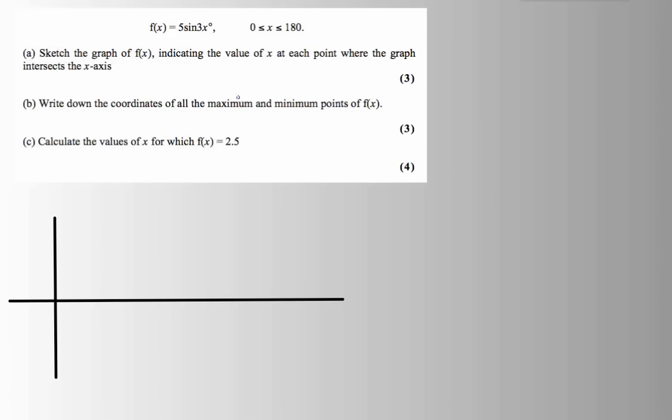The graph we've got to consider is 5 sine of 3x. Our big question is, if we do 5 times the sine of 3x, what does the 5 do to the graph, and what does the 3 do to the graph?